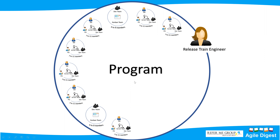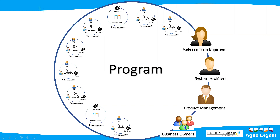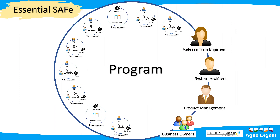This boundary is called a Program. If I have multiple teams, I align all the teams in one boundary or area — that is called a program. As a team I had three roles: Scrum Master, Product Owner, and development team. When talking about a program, that boundary itself is a team of teams. It has roles: a Release Train Engineer, a System Architect, a Product Manager or product management team, and a Business Owner.